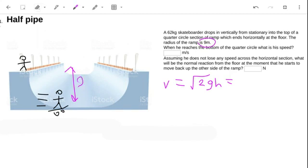So that is 9 meters there. Plugging that in, I get 2 times 9.81 times 9, and I take the square root, and that gives me 13.3 meters per second.